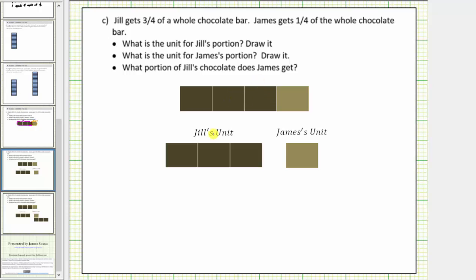When compared to the whole, Jill's amount is three-fourths of the whole, and compared to the whole, James's amount is one-fourth of the whole.